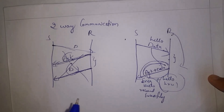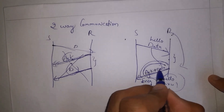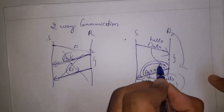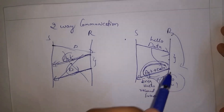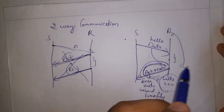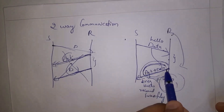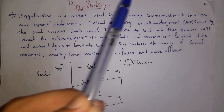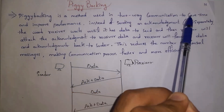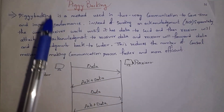Instead of sending two separate messages, in piggybacking, both acknowledgement and data are sent at once. As there are only fewer messages, communication in piggybacking is fast. Piggybacking is the method used in two-way communication to save time and improve performance.